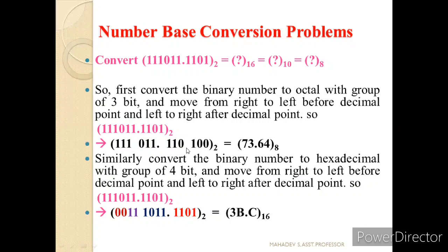Similarly, to convert to hexadecimal, we make groups of four bits. Before the decimal point, the grouping is 1011 and 0011. After the decimal point, we have 1010 — appending zeros as needed. This number converts to 3B.C in hexadecimal. We have easily converted the binary number to both octal and hexadecimal.